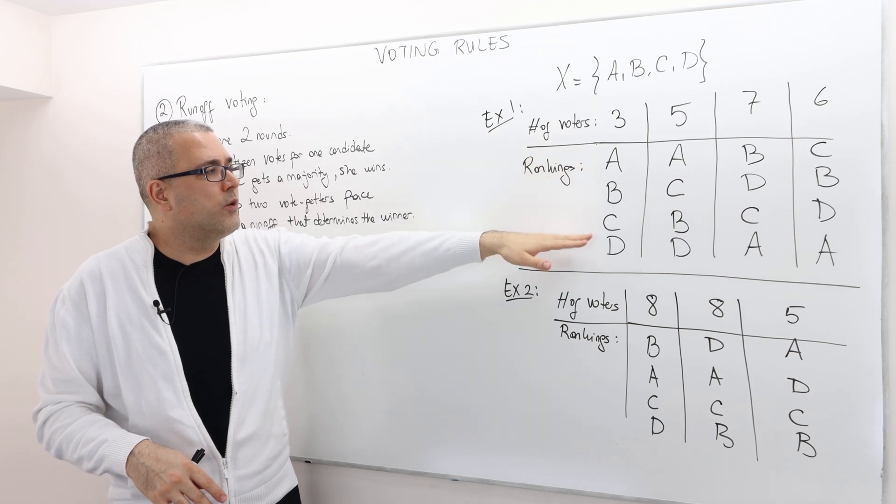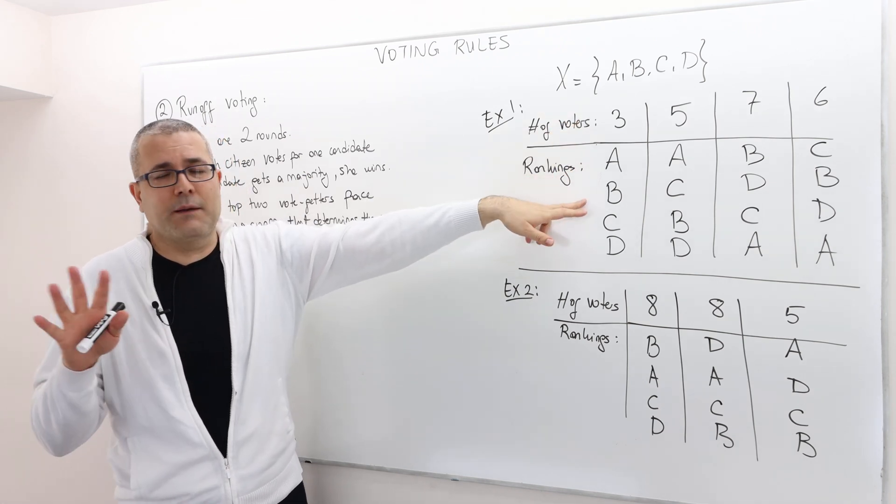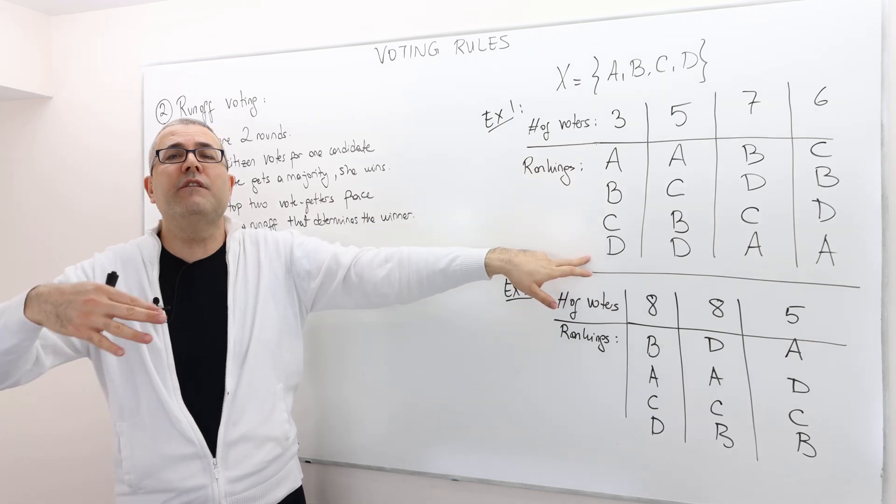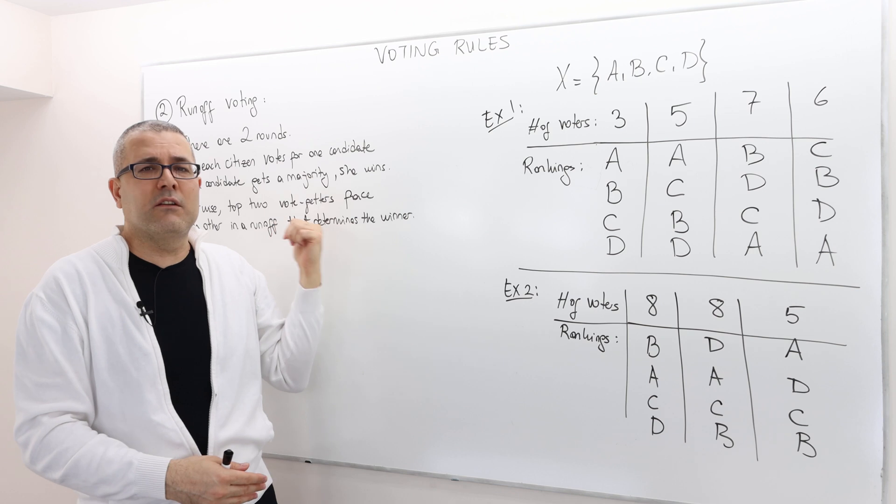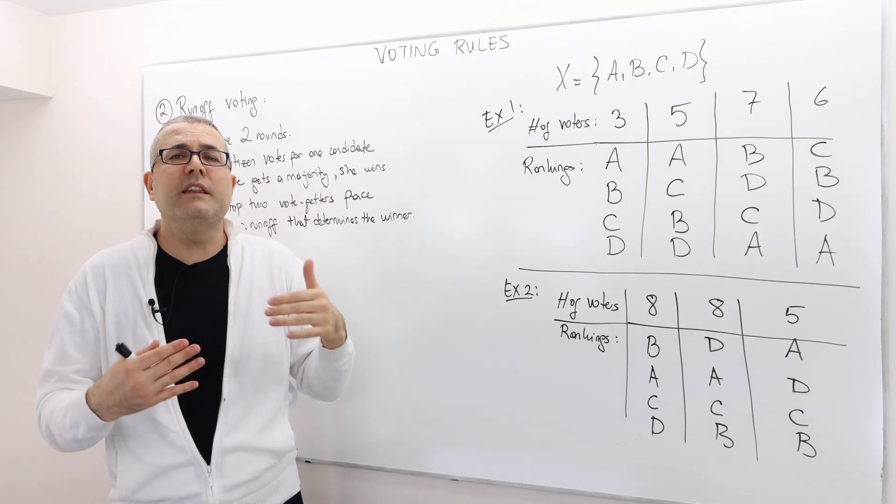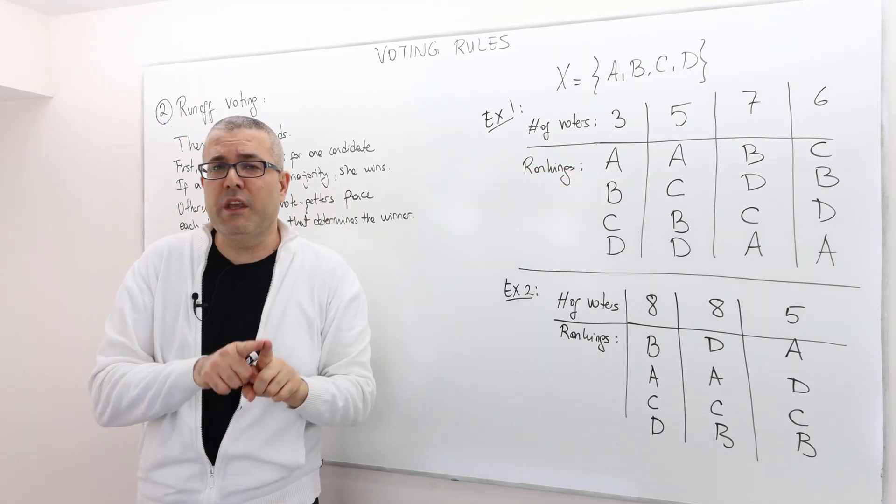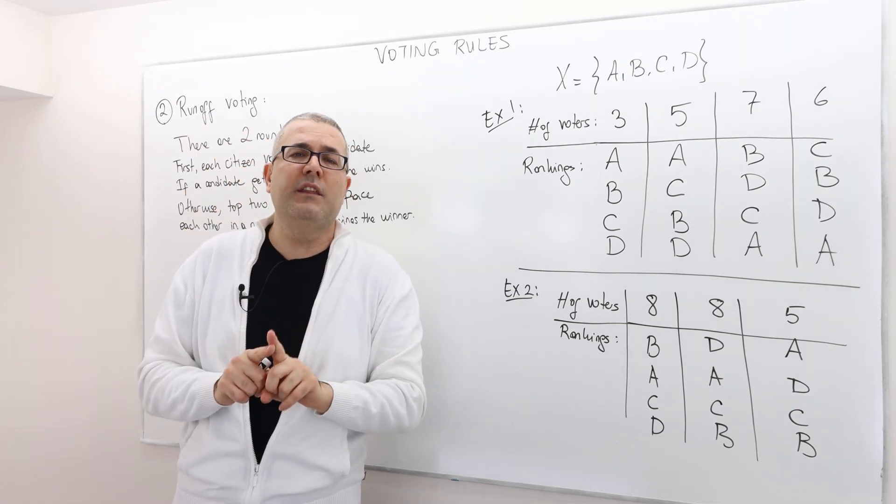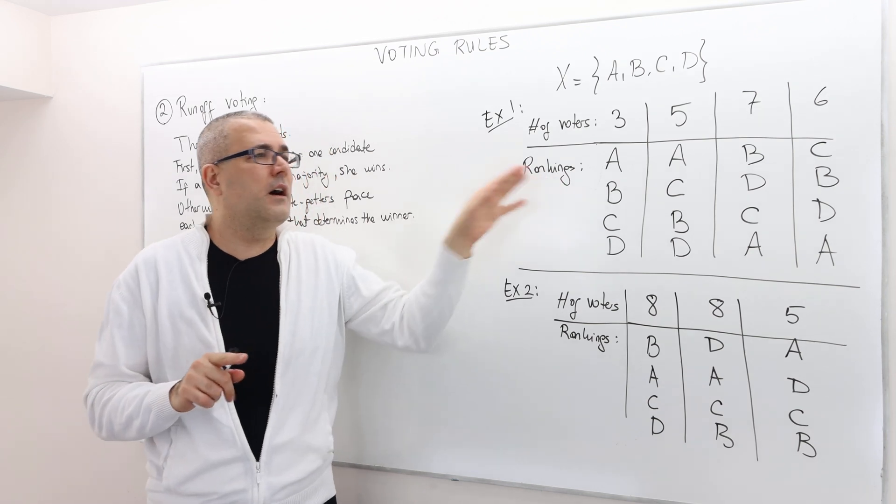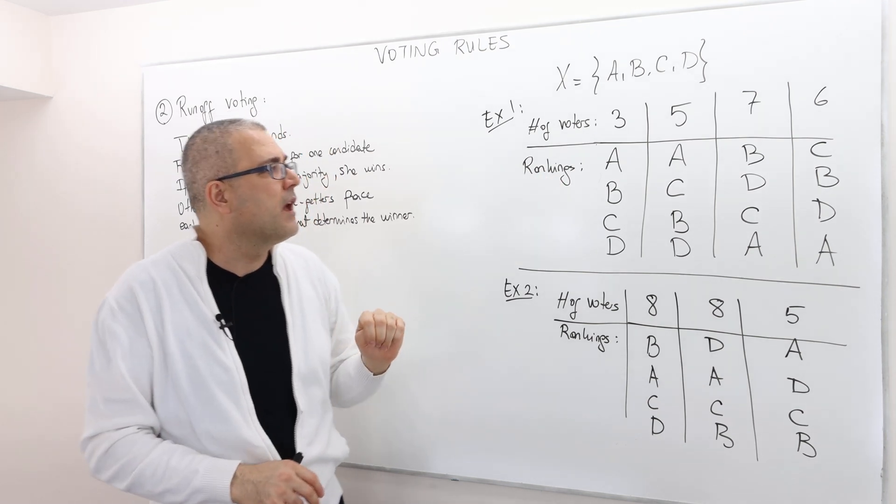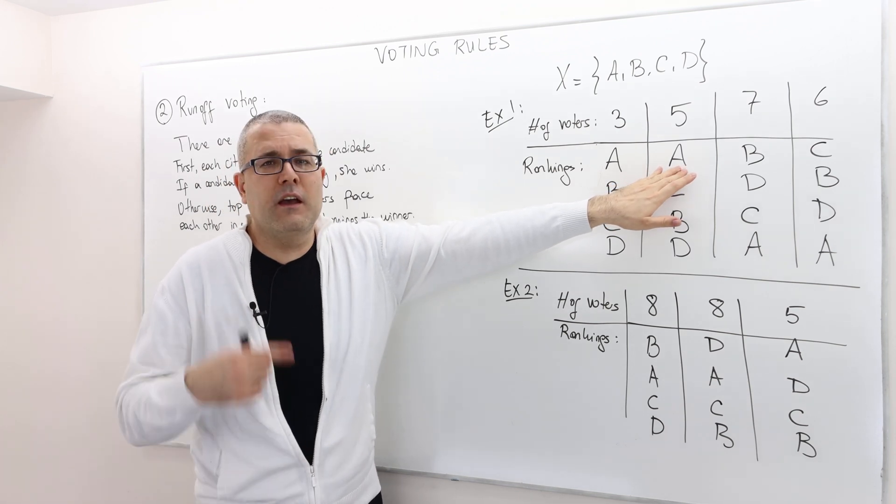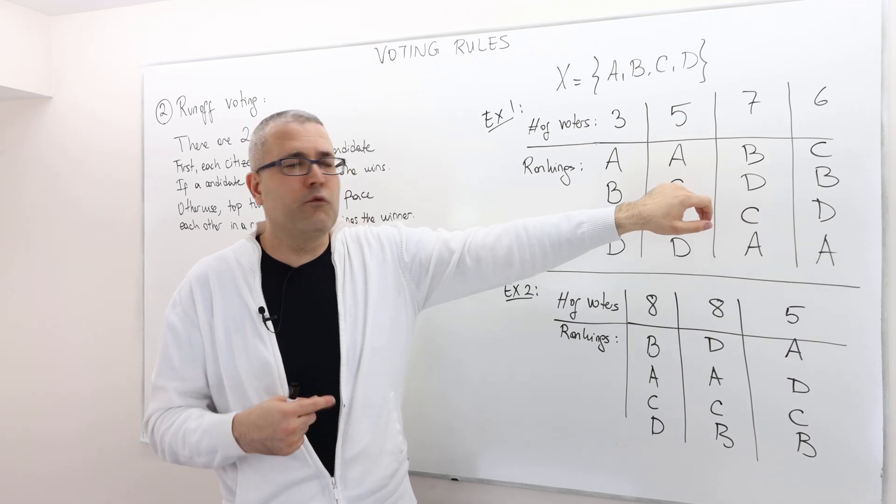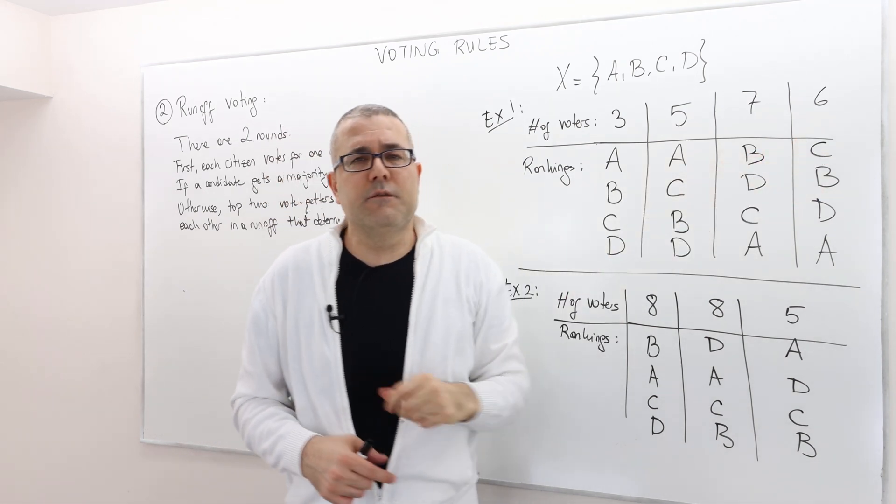Three voters prefer A to B, B to C and C to D. So if they were actually voting in a runoff voting, then they would be voting for A. We assume they do not vote strategically. We assume everybody votes their first best candidate. Five voters would vote for A, seven voters would vote for B, and six voters for C.